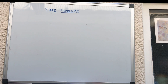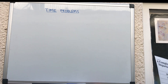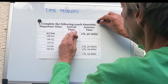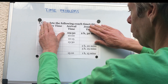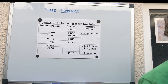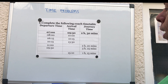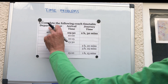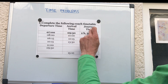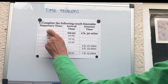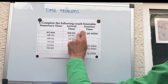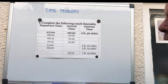Here is a coach timetable — we have a few problems to work out. Departure time is when the coach leaves, arrival time is when it gets to its destination, and journey time is how long it took. For example, if it left at 0709 and arrived at 0939, we add two hours to get from 07 to 09, and then 30 minutes, giving two hours 30 minutes.